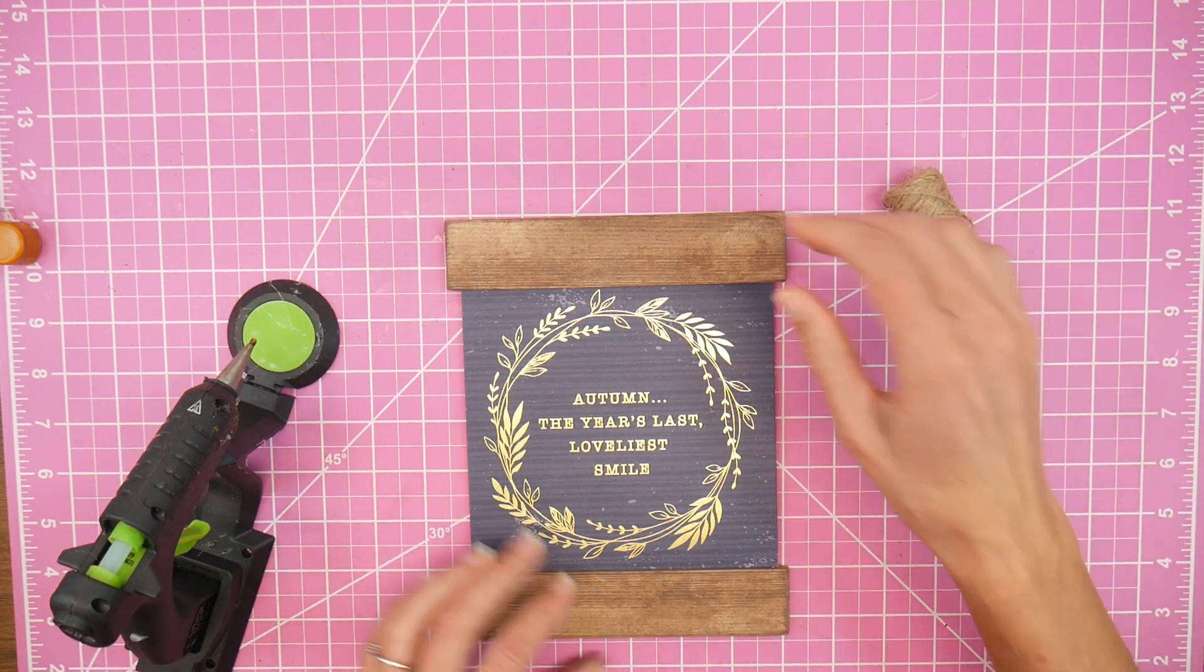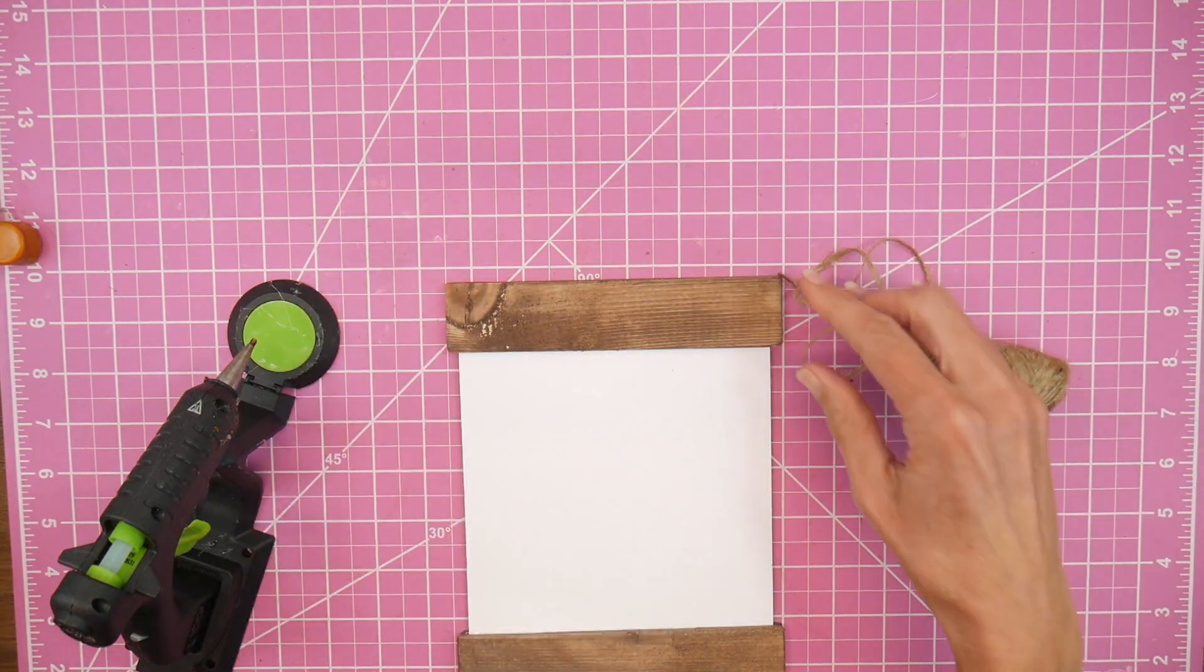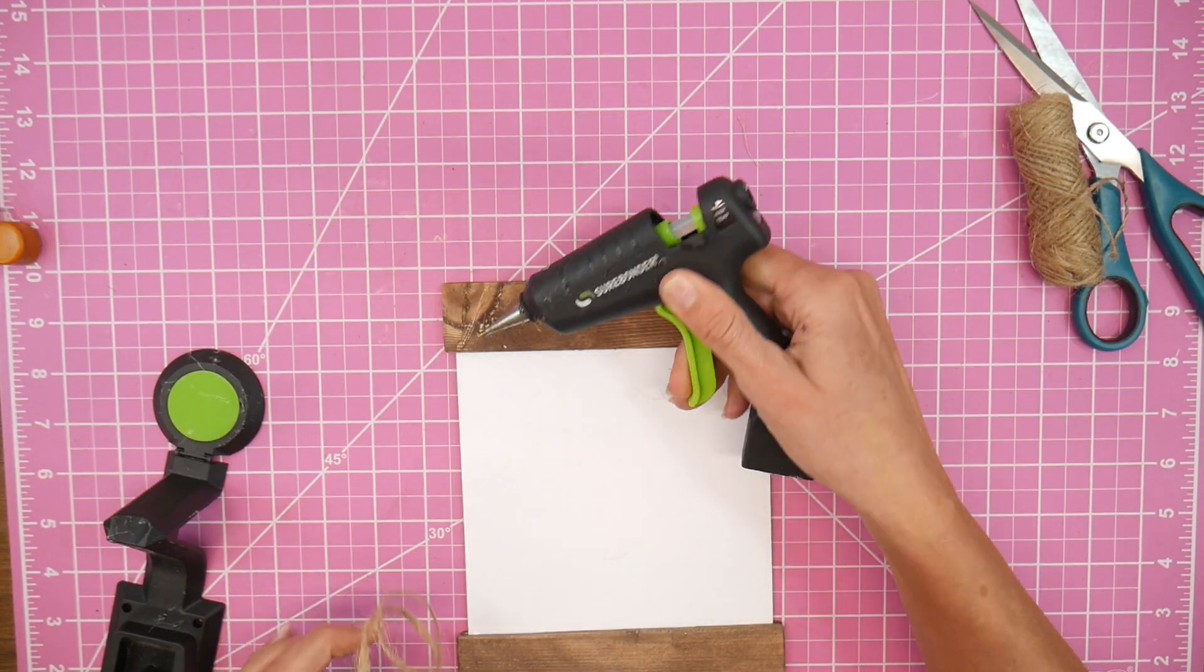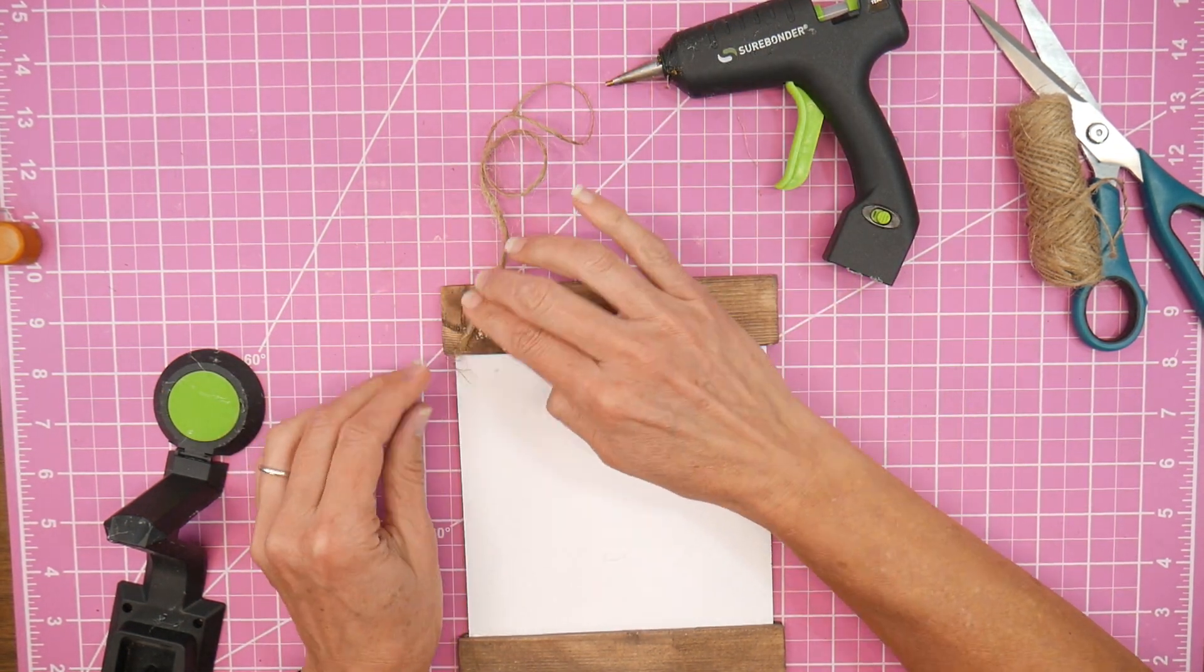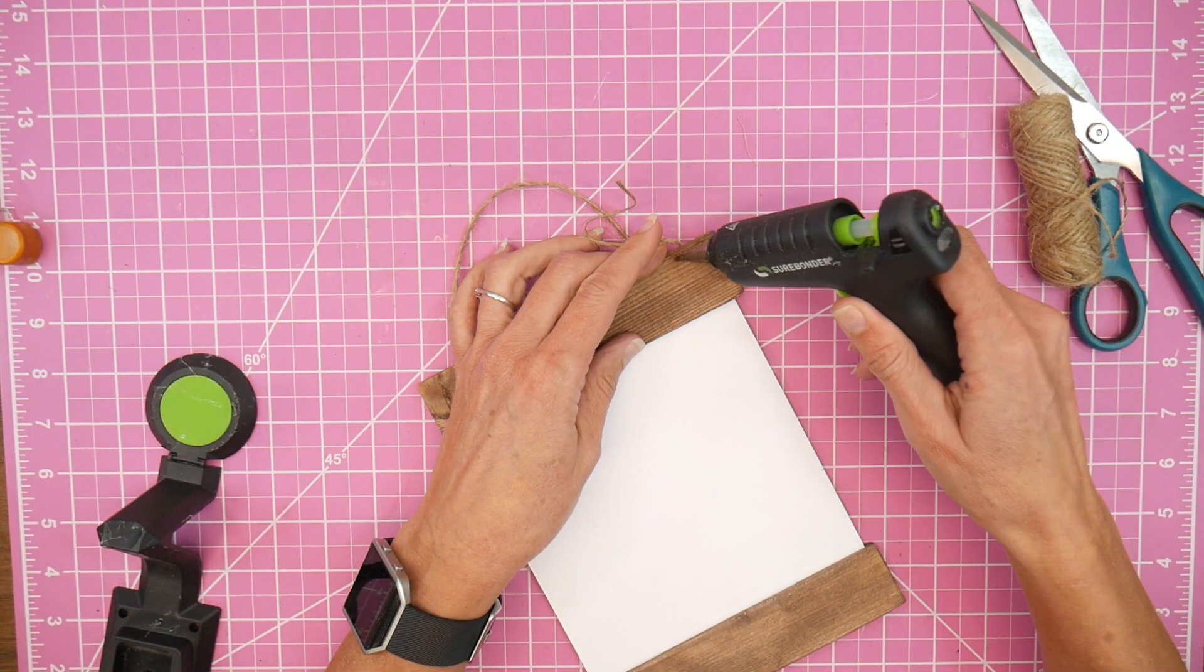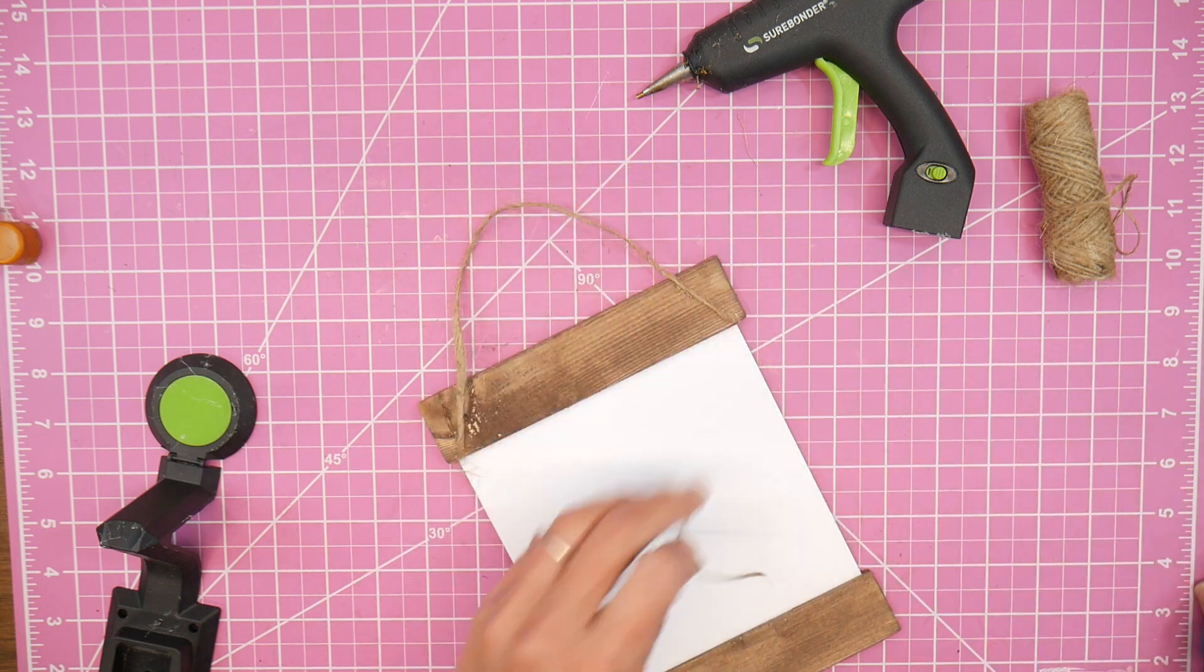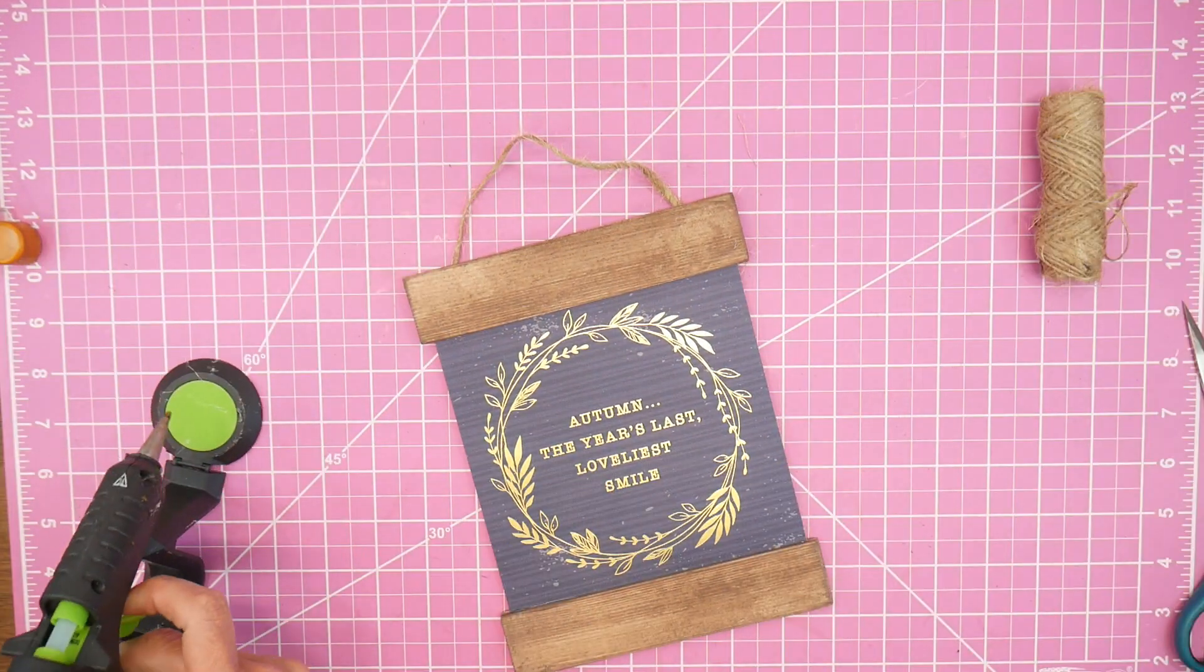We are going to add a hanger. This is just some simple jute twine. I'm going to cut, I'm going to kind of figure out how much I want, cut it off, and then we're just going to hot glue that to the back. And twine you can pick up at the Dollar Tree, Walmart, craft stores. So I'm just adding a little bit of hot glue on the left side. And then I'm going to come and I'm doing it at an angle. And I'm going to add my hot glue to the right side as well. And then I trim that up and now you can hang it on the wall. I love these style of signs and was happy to make my own version.